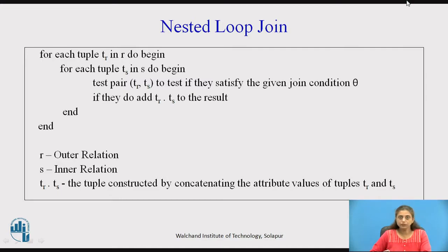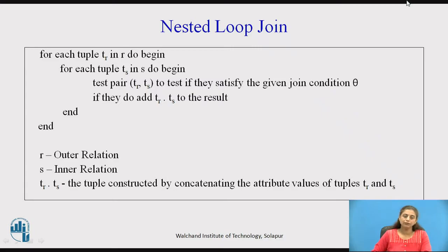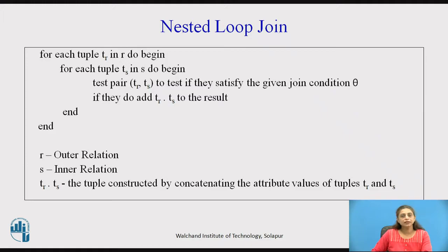Whenever we want to perform a join of two relations, we need to know which algorithm will be used and what its cost will be. In nested loop join, we have two relations R and S — one is the outer relation and one is the inner relation. R is the outer relation and S is the inner relation because for every tuple of R we are comparing every tuple of S.